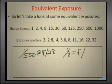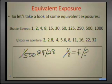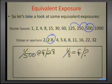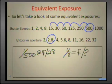What is my f-stop going to be if I change my shutter from a 500th down to 1/8th of a second? We are at a 500th of a second at f2.8, and we are going to go to 1/8th of a second. Let's see how many shutter speeds slower that is: 500 to a 250th is 1, to a 125th is 2, a 60th is 3, a 30th is 4, a 15th is 5, and 1/8th of a second is 6 — six shutter speeds slower than what we started with.